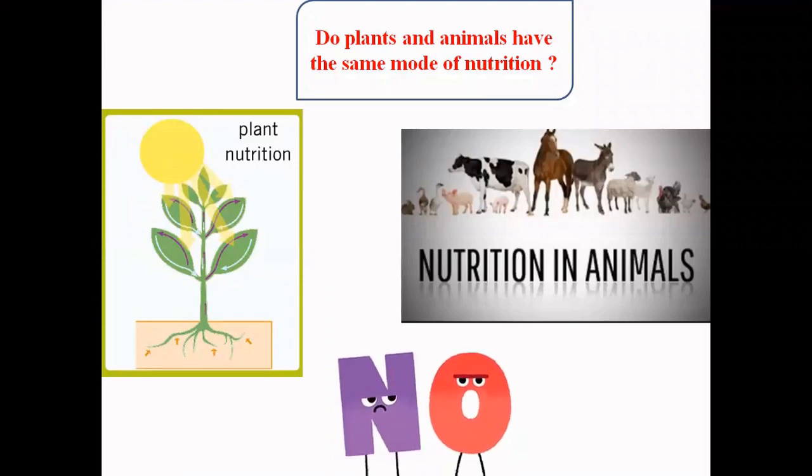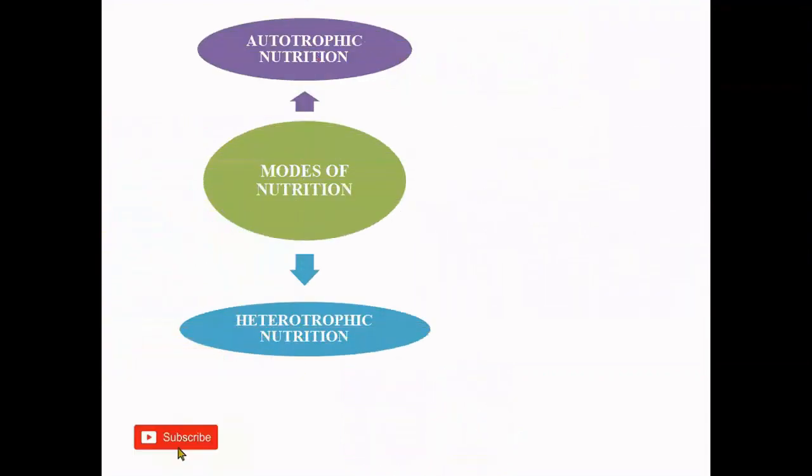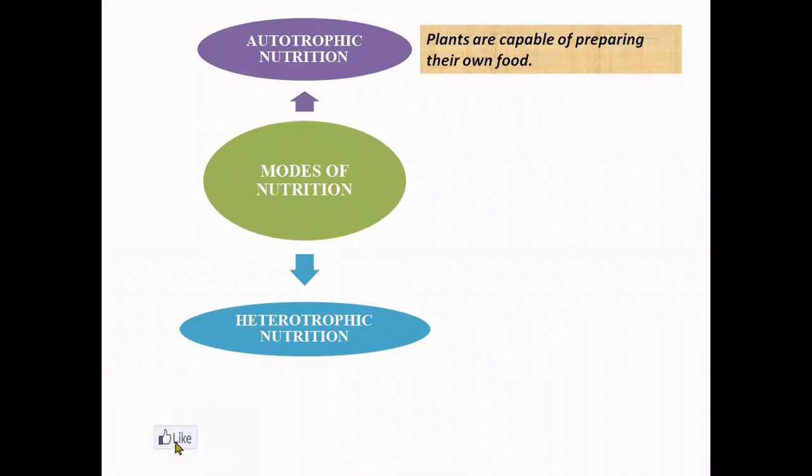So now let us begin with our new topic, mode of nutrition. We have two modes of nutrition: autotrophic nutrition and heterotrophic nutrition. Now let's see who falls in the category of autotrophic nutrition. It's the plants. Plants are capable of preparing their own food, so the green plants are called autotrophs. Auto means self and trophs means nourishment. So the plants self-nourish themselves and hence this mode of nutrition is known as autotrophic nutrition.